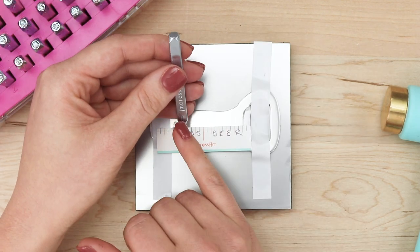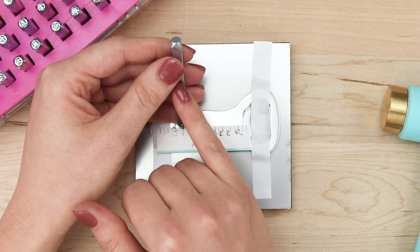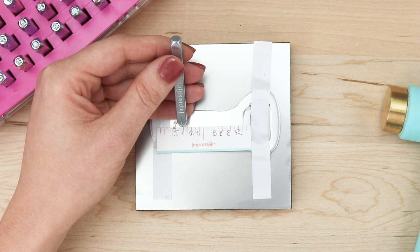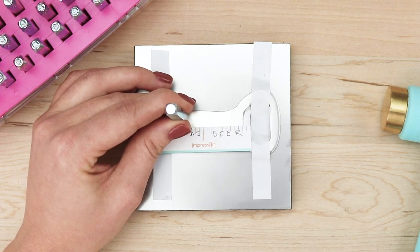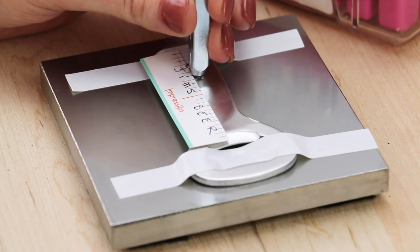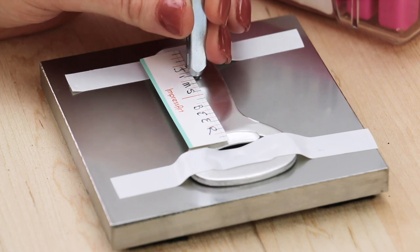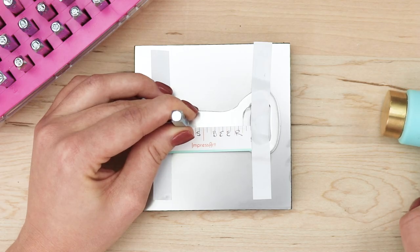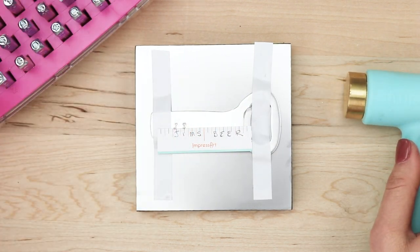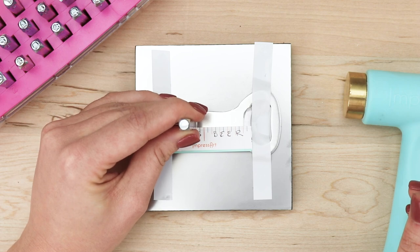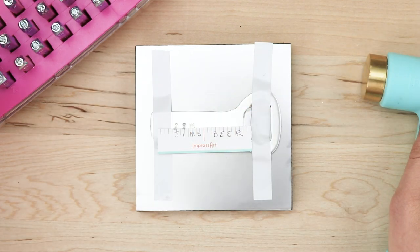Again, make sure the ImpressArt logo on the side of the stamp is facing you. Hold the stamp towards the bottom of the stamp shank, lightly drag it down towards the stamp guide, feel that resistance, hold it flat and firmly in place, take the hammer and give it one hard hit. Follow the same technique to complete your desired word.